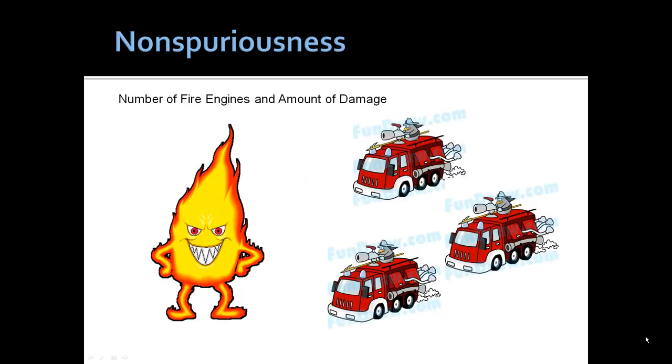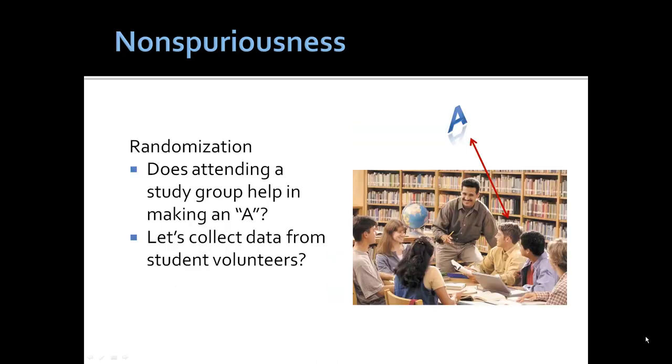The relationship cannot be a spurious relationship. For example, there is an association, an observed association, between the number of fire engines at a fire and the amount of damage. Does this mean that the fire engines or the fire department causes the damage? No. It's a spurious relationship. The underlying cause is the size of the fire. The size of the fire will result in more fire engines but also in far more extensive damage.